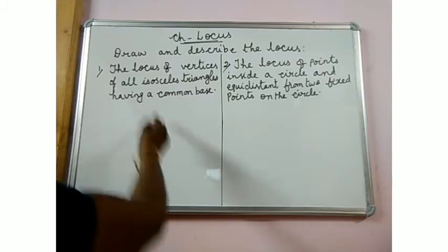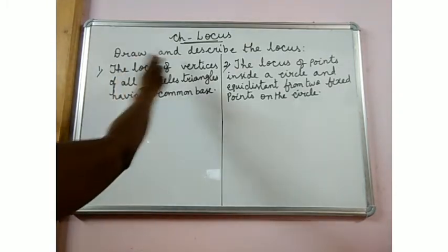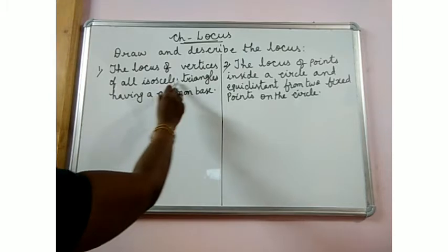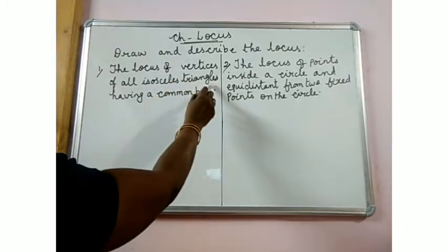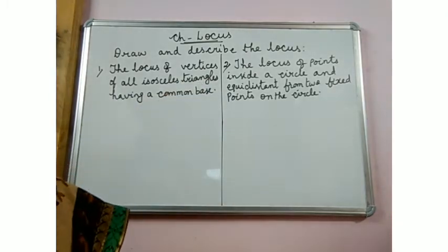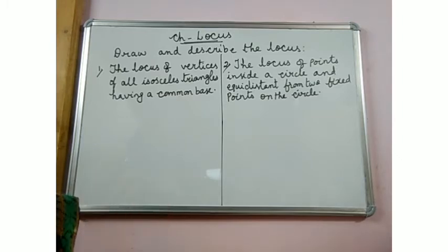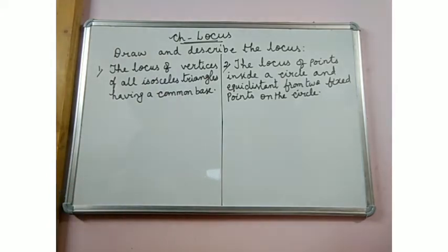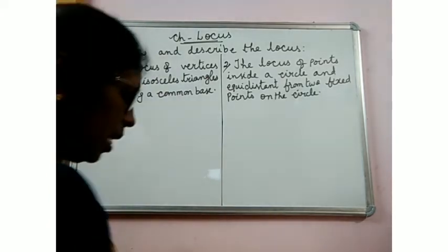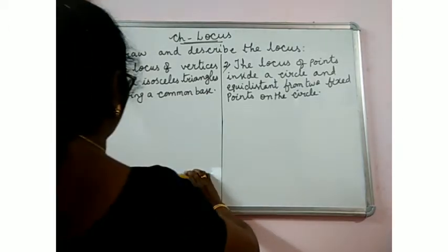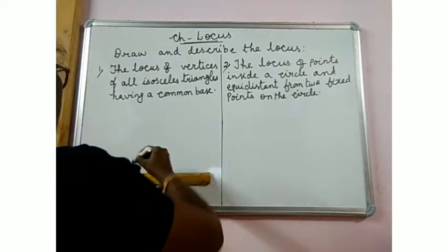The first problem: draw and describe the locus of vertices of all isosceles triangles having a common base. We need to find what is the locus of vertices of all isosceles triangles. So let me draw the isosceles triangles having a common base first.